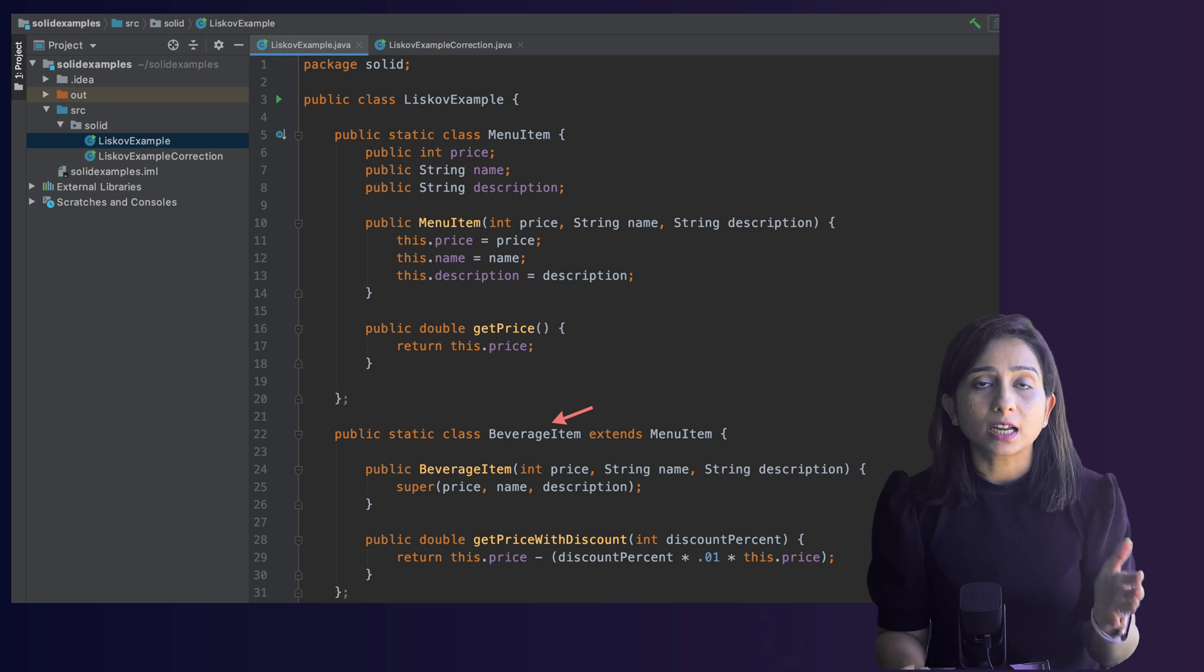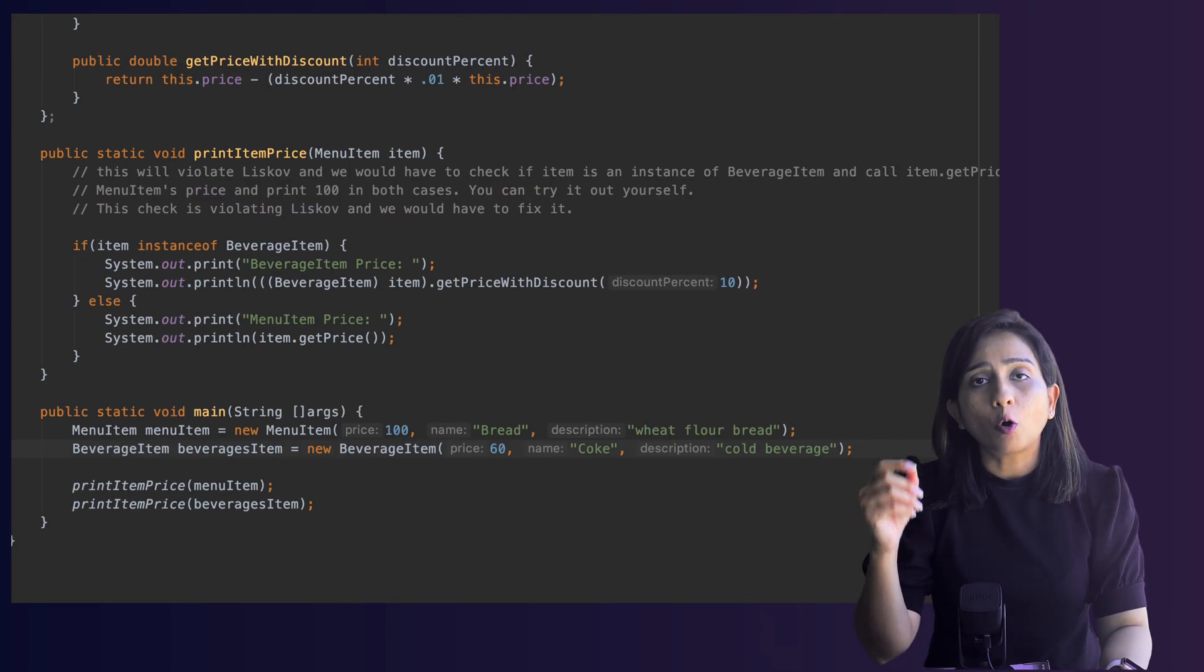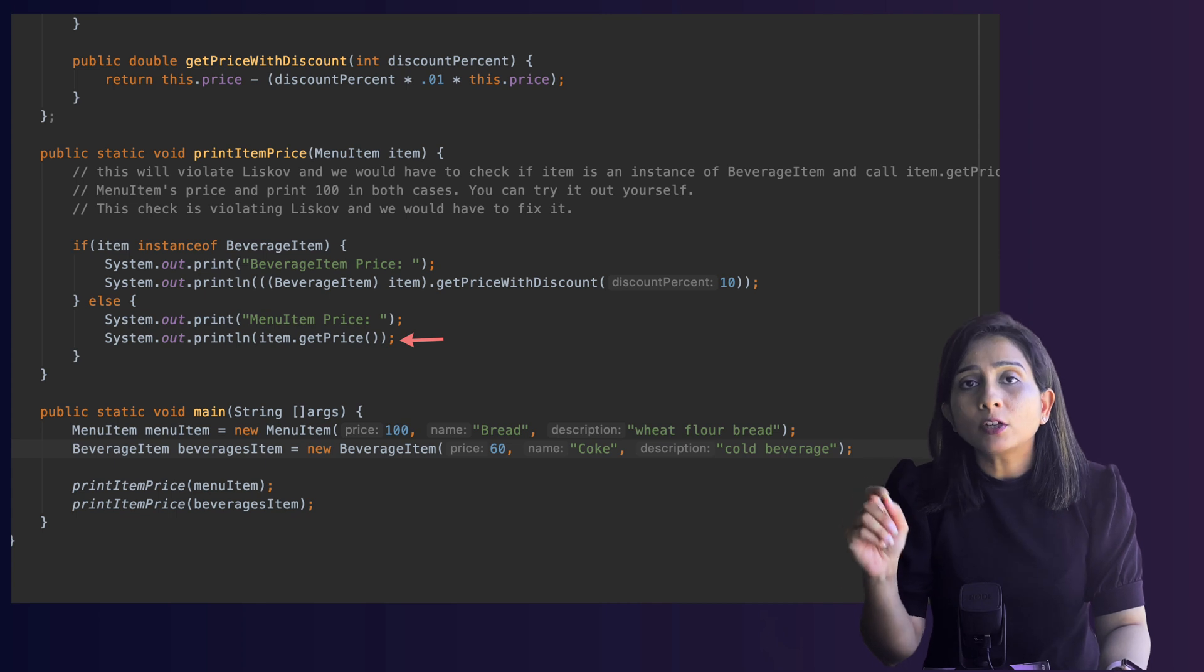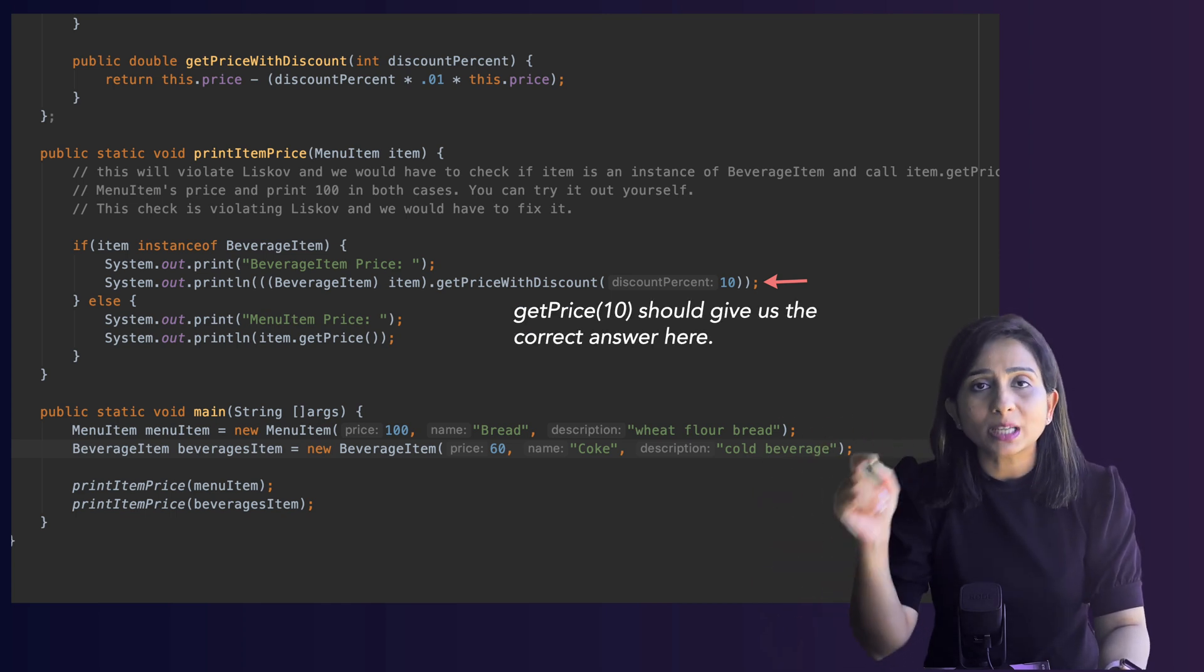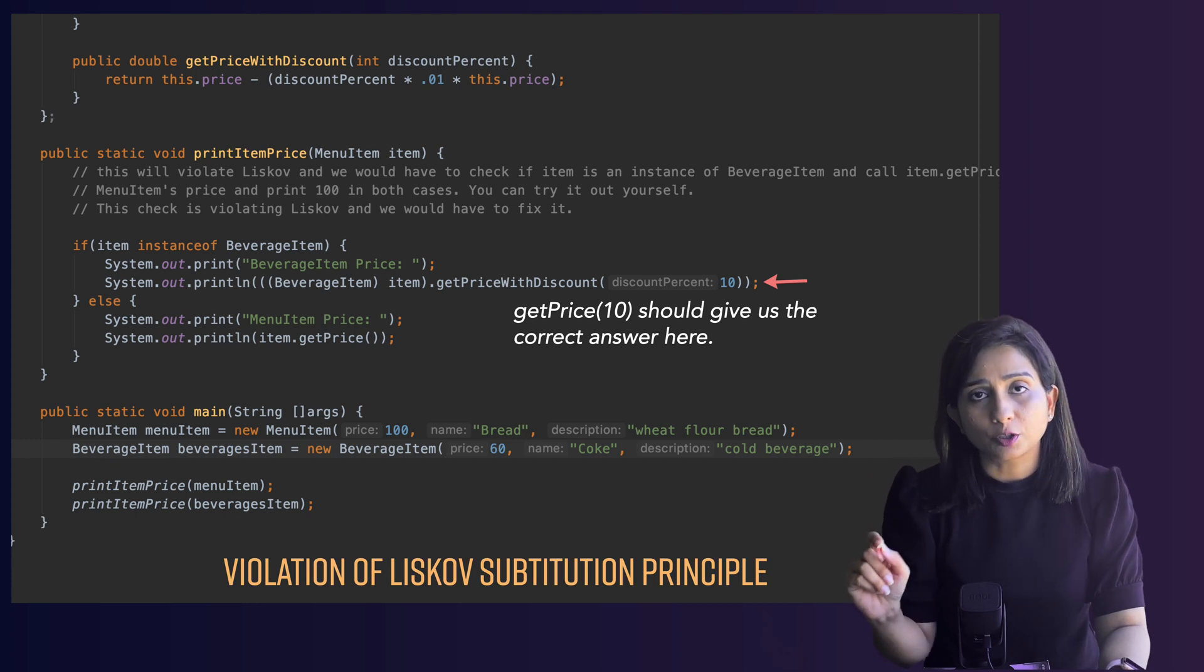So what would you do? You can derive a class BeverageItem from the class MenuItem and you can write a function in that BeverageItem class called getPriceWithDiscount. Now the problem is whoever is calling this code on MenuItem.getPrice. If they are calling MenuItem.getPrice their code will not break but if they have passed the instance of BeverageItem then they would have to call BeverageItem.getPriceWithDiscount. Now first this will break the principle because you are not able to substitute the BeverageItem instead of the MenuItem because now you have to change the way you call the function. So this is a violation of Liskov Substitution Principle.